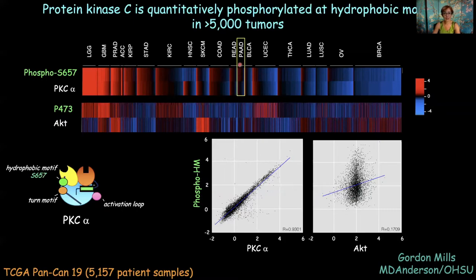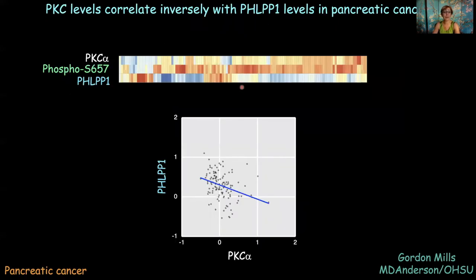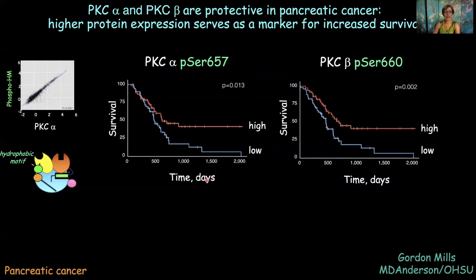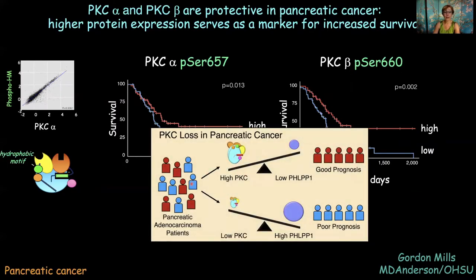We focused on pancreatic cancer because we had evidence that the levels of PHLPP, the negative regulator, were important in determining how much PKC was present in these cancers. Doing this reverse phase protein array analysis, we find that low levels of PHLPP correlate with high levels of phosphorylation at the hydrophobic motif. Furthermore, if we stratify patients by high versus low levels of PKC-alpha or PKC-beta, patients with high protein levels have a much better survival outcome. Patients with high PKC and low negative regulator have a good prognosis, while patients with high PHLPP but low PKC have a poor prognosis.